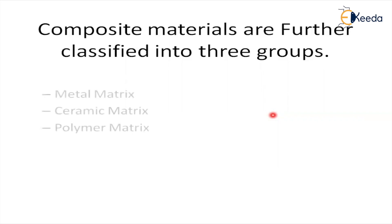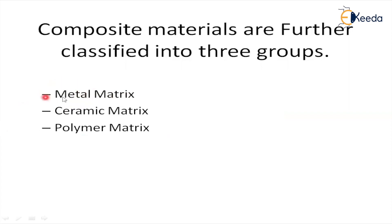Observe the classification: metal matrix composites, ceramic matrix composite, and polymer matrix composite. Metal matrix means metal has the maximum percentage. Ceramic matrix means ceramic has the maximum percentage. Polymer matrix means polymer is the maximum percentage in that composite material. As we are discussing only classification, just the names of the composite types are quoted here — in another video, we will discuss the properties of materials.